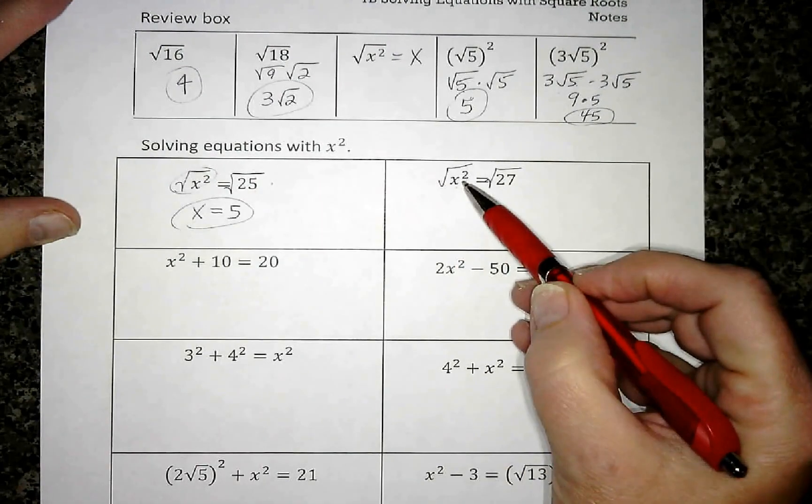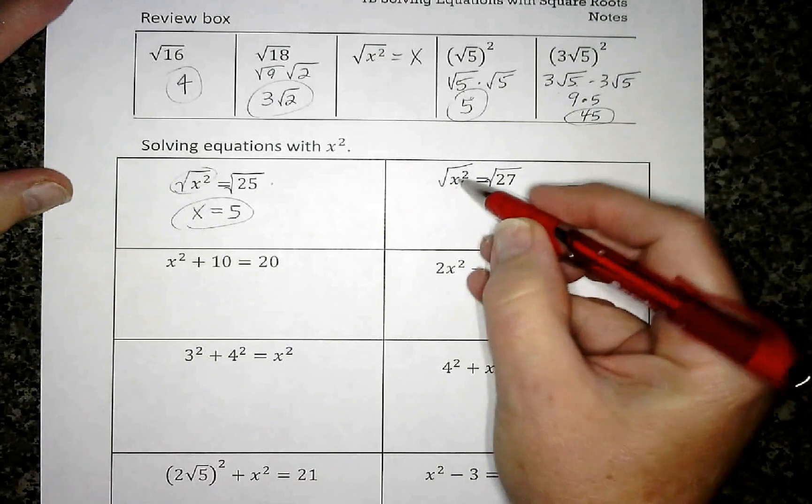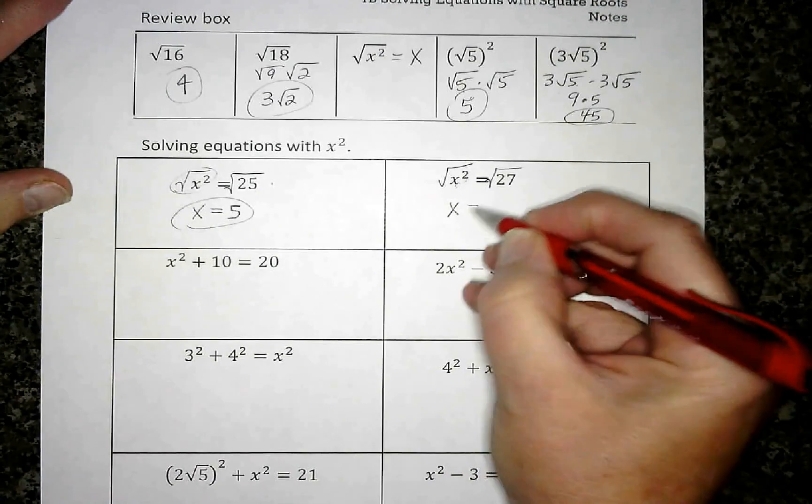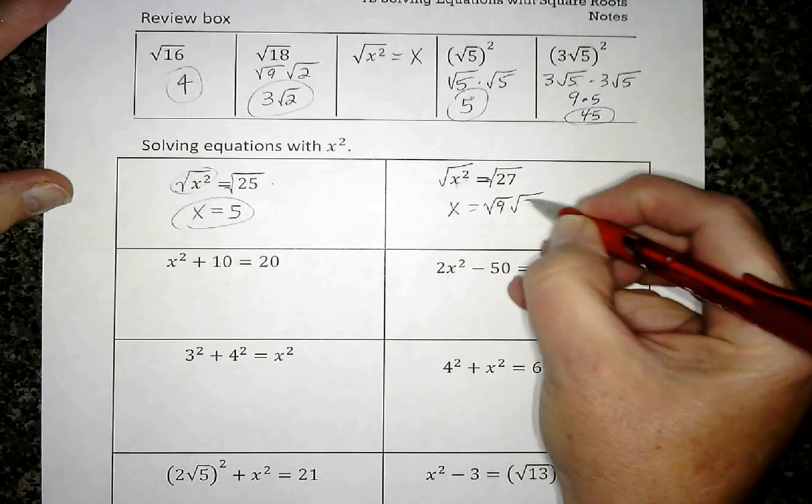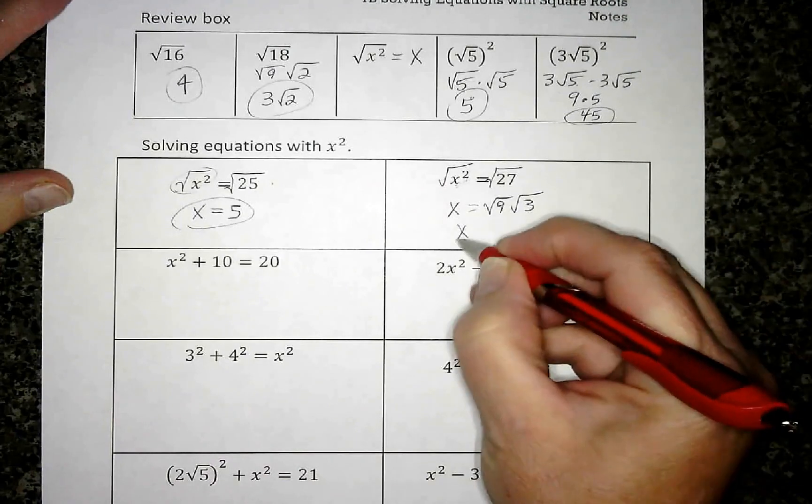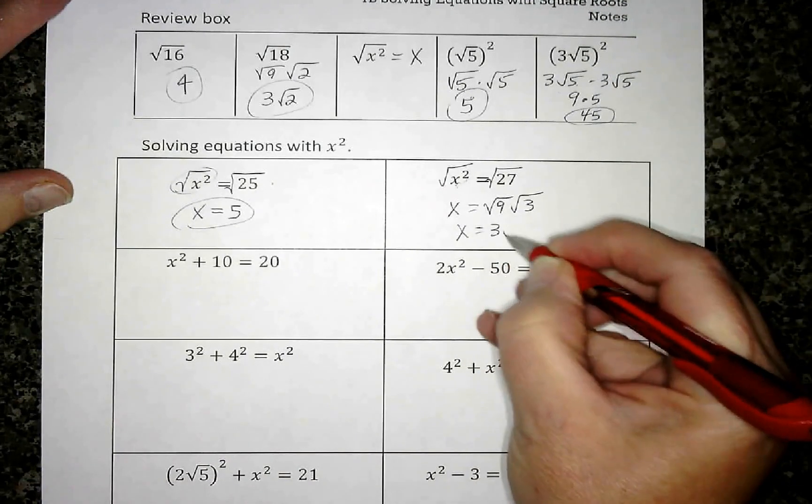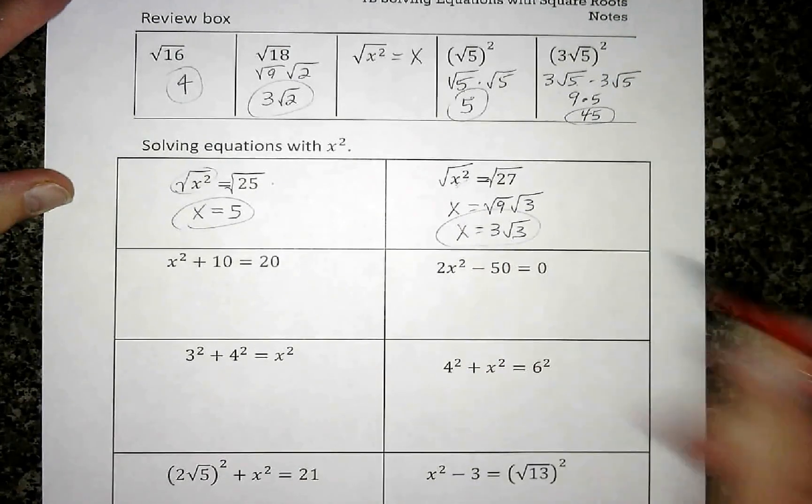I have an x², I want just an x, so I'm going to square root. If I square root this side, I have to square root this side. Now 27 can be broken into 9 times 3, which simplifies to 3√3.